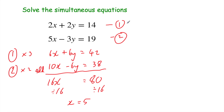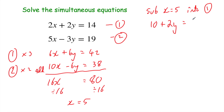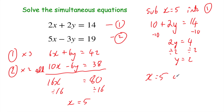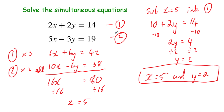Now we can substitute x equals 5 into equation 1. So 2 times 5 is 10, so we get 10 plus 2y equals 14. Taking away 10 from both sides: 2y equals 4. Divide by 2 and divide by 2, and y equals 2. So x equals 5 and y equals 2 — that's our answer. Let's check in equation 2: 5 times 5 minus 3 times 2 is 25 minus 6, which equals 19. That's right.